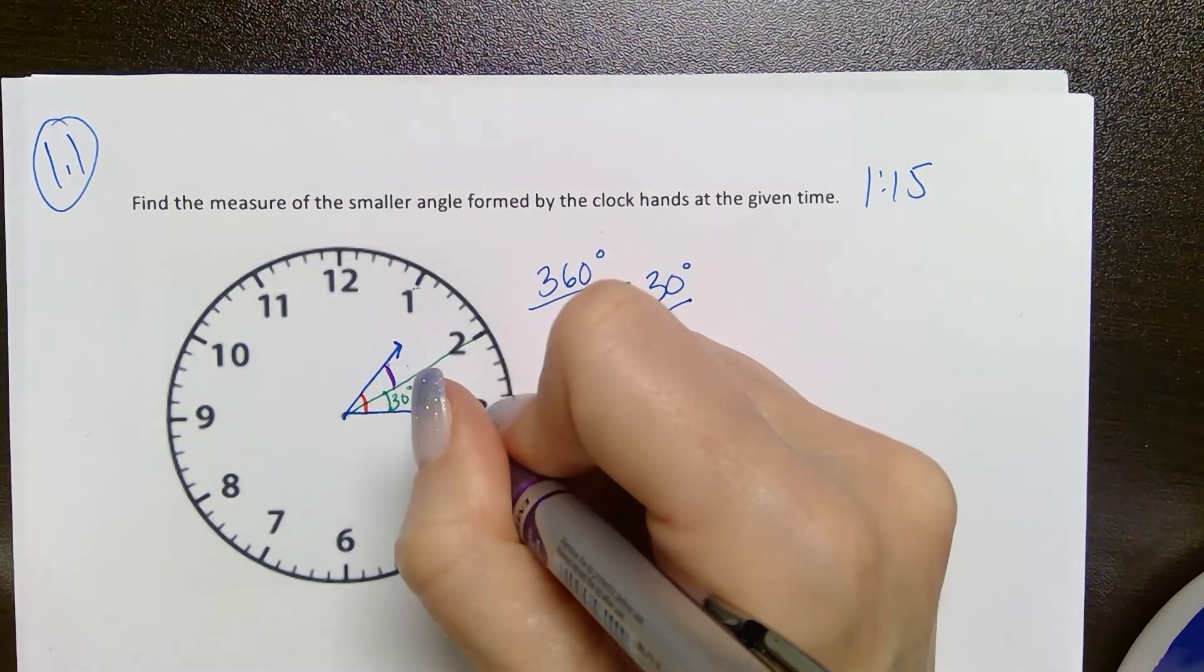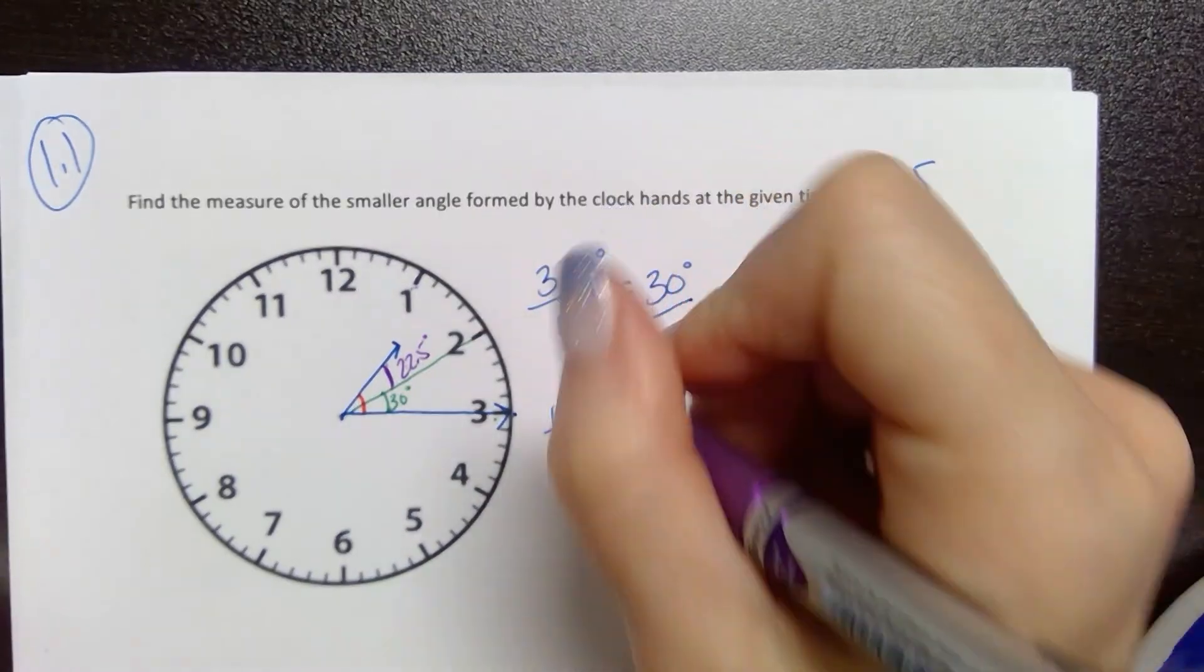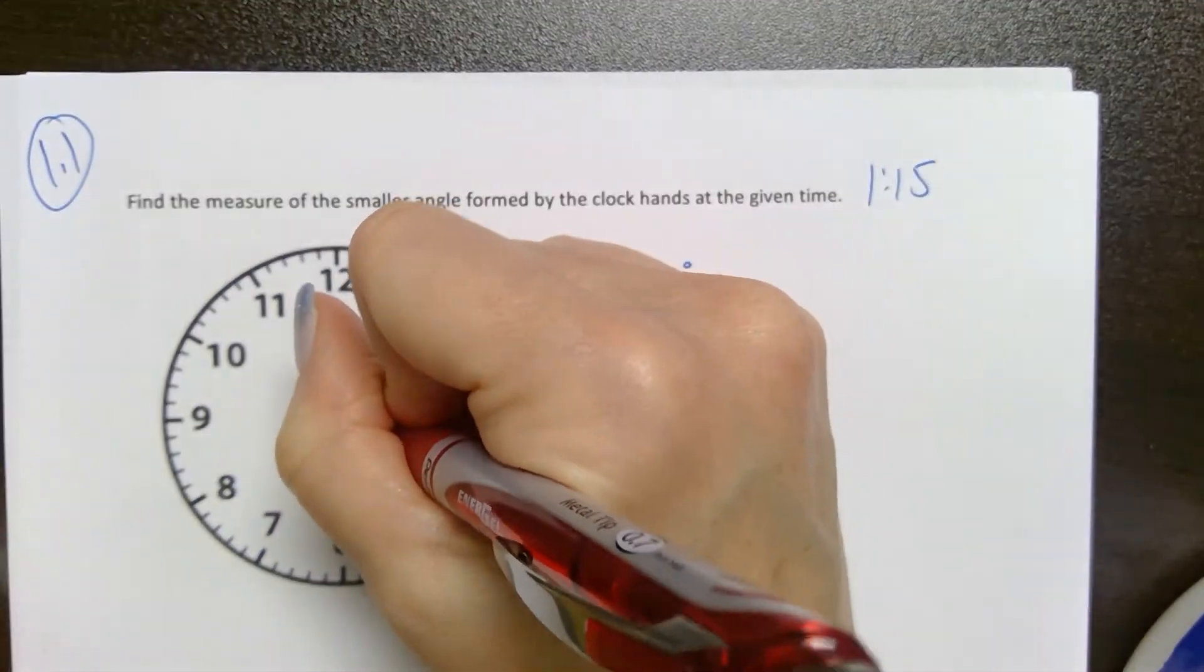So this angle is 30 degrees and this angle is 22 and a half degrees. So I have a total angle, this angle that I'm interested in between the hands,